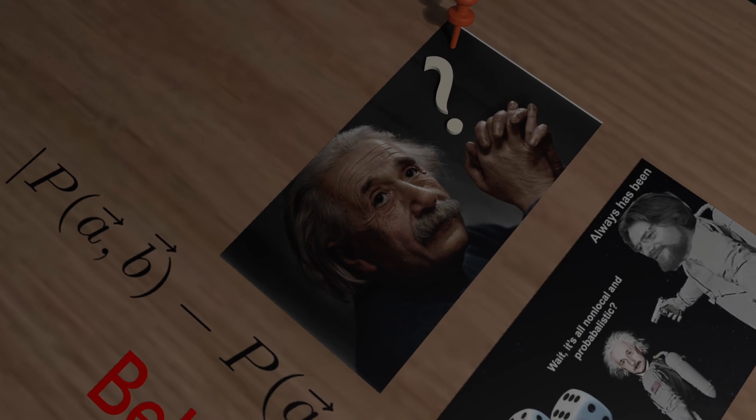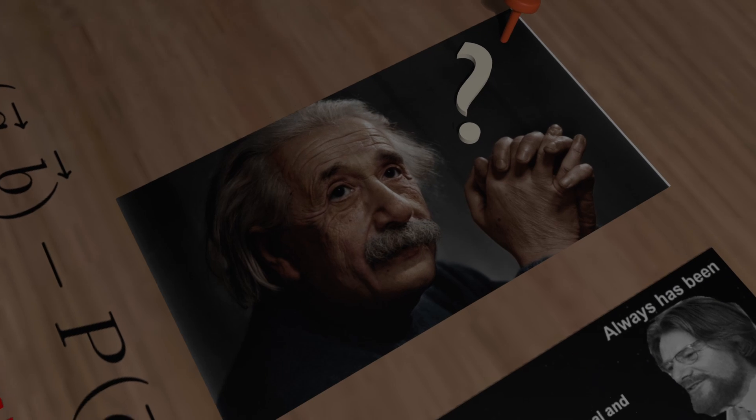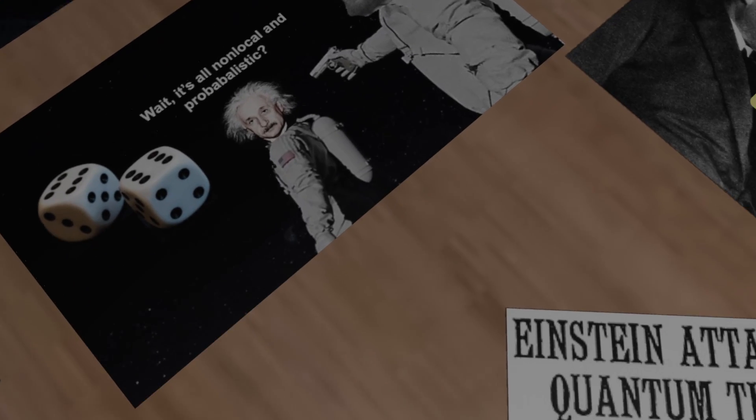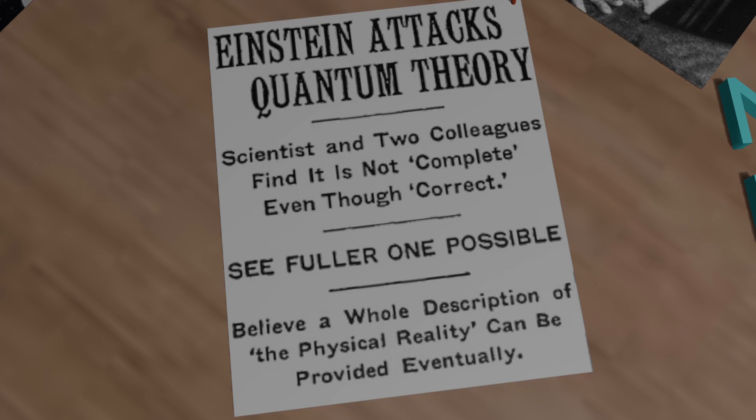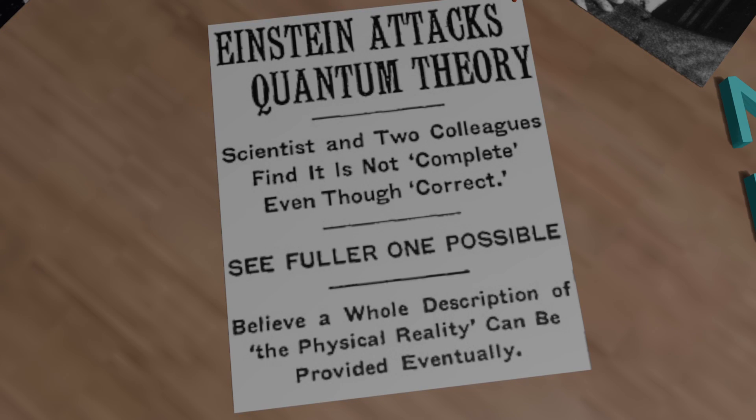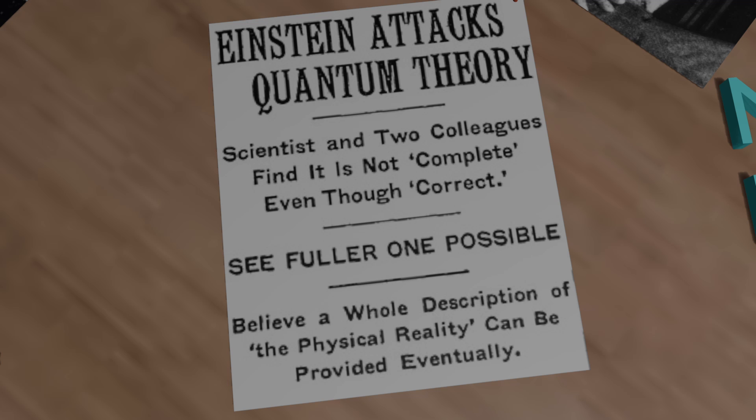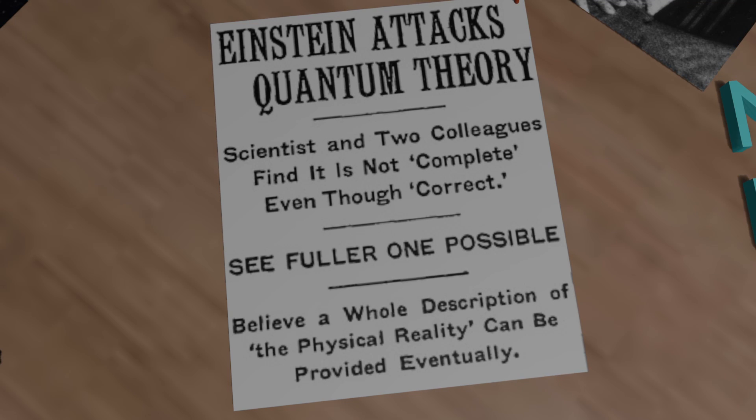Now, to understand why Einstein was so bothered by spooky action at a distance, we need to take a step back and look at the paper that first brought this idea. The famous EPR paper, published in 1935 by Einstein, Podolsky and Rosen, hence EPR.